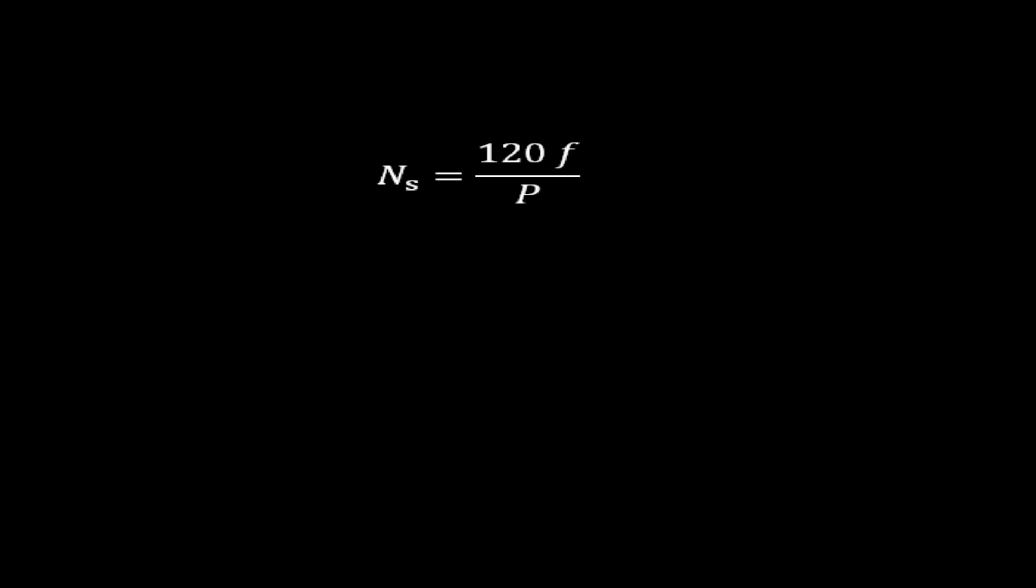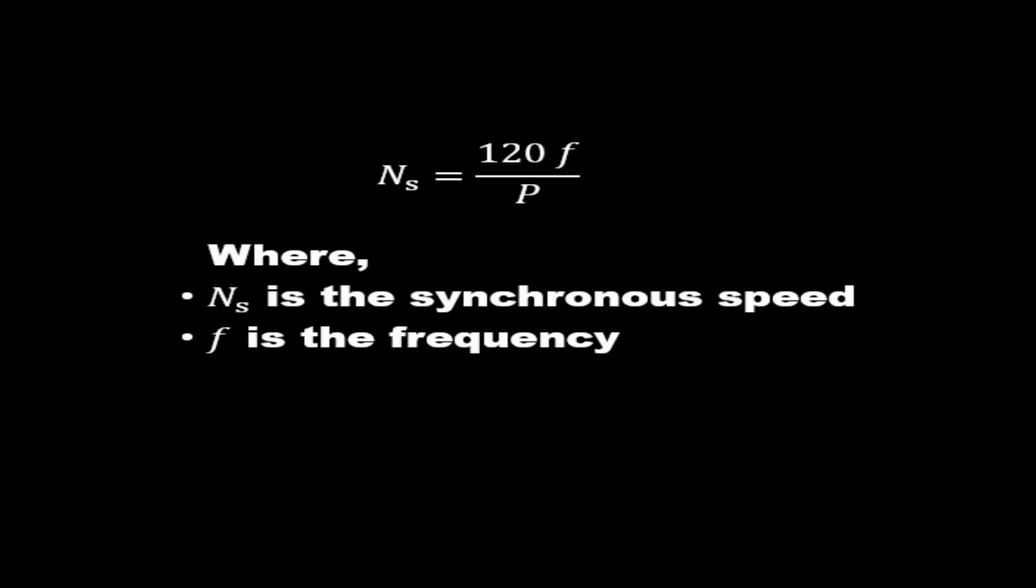Synchronous speed NS is equal to 120F by P, where NS is the synchronous speed, F is the frequency, and P is the number of poles. It means that by varying the frequency the synchronous speed can be varied.